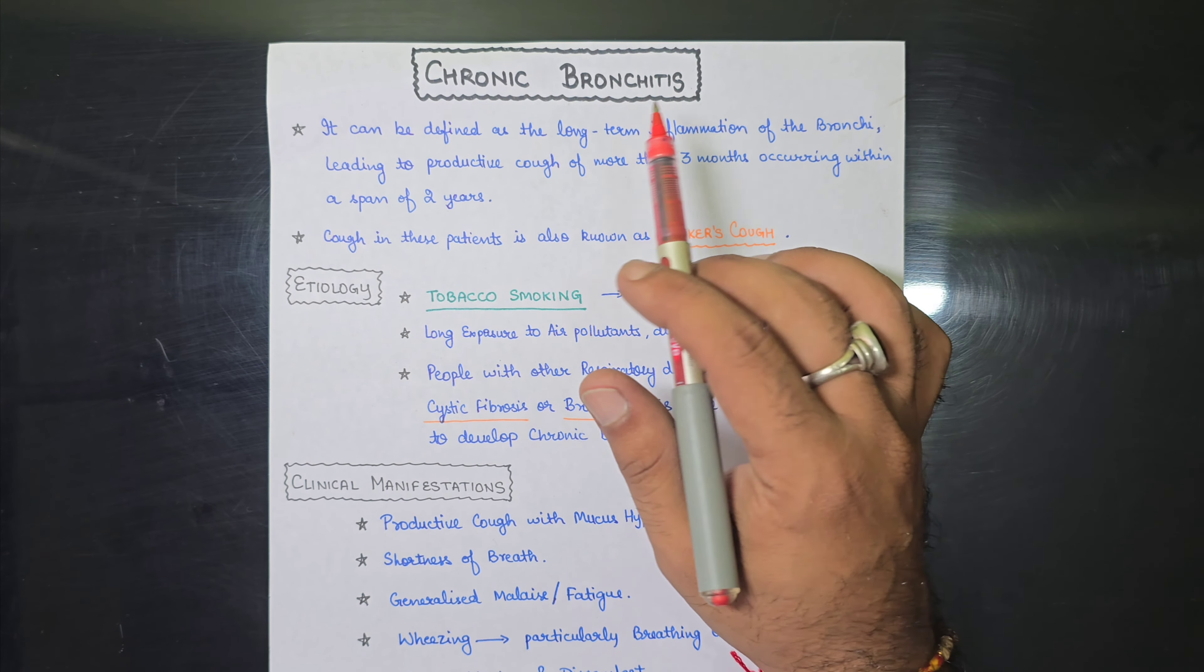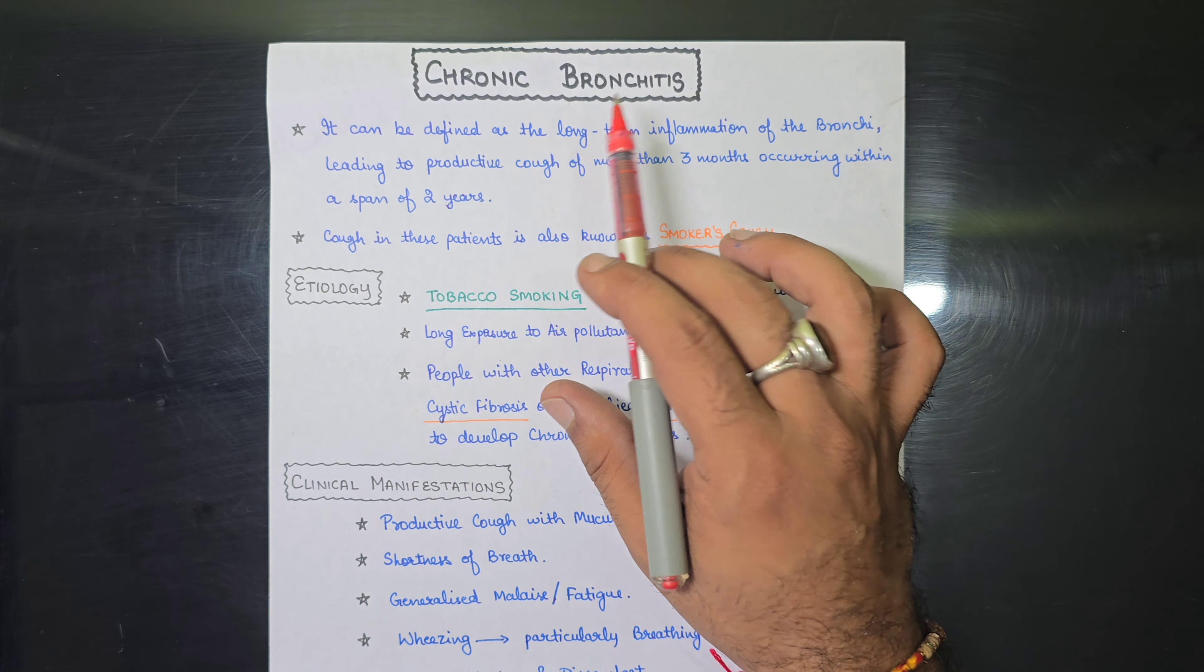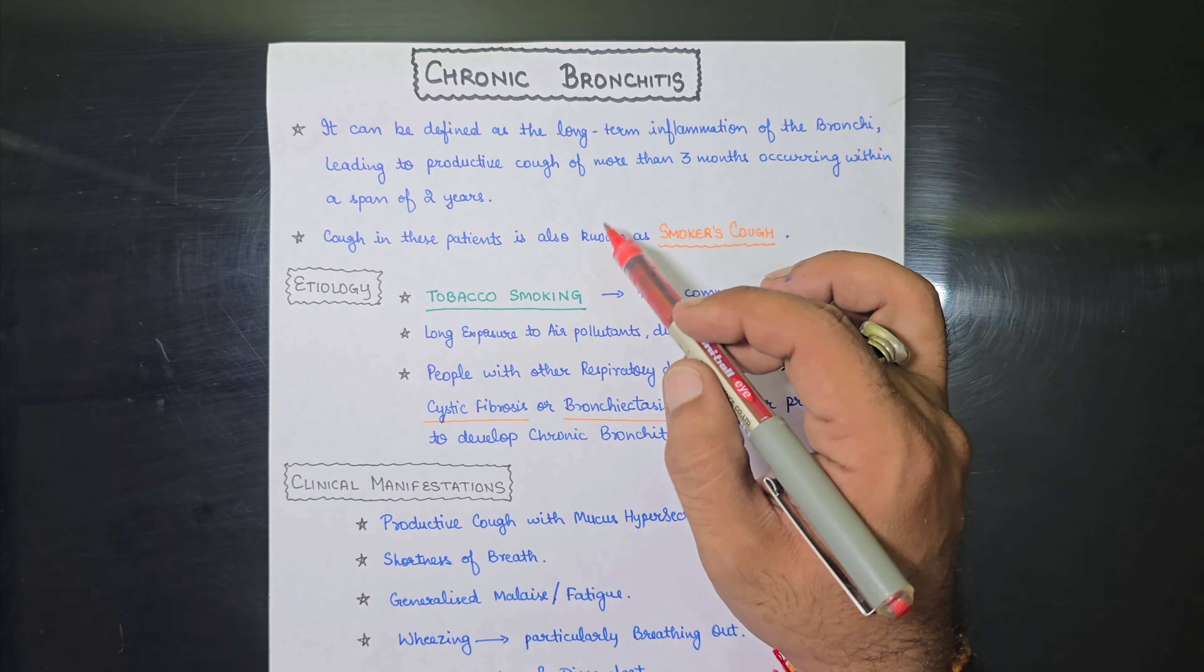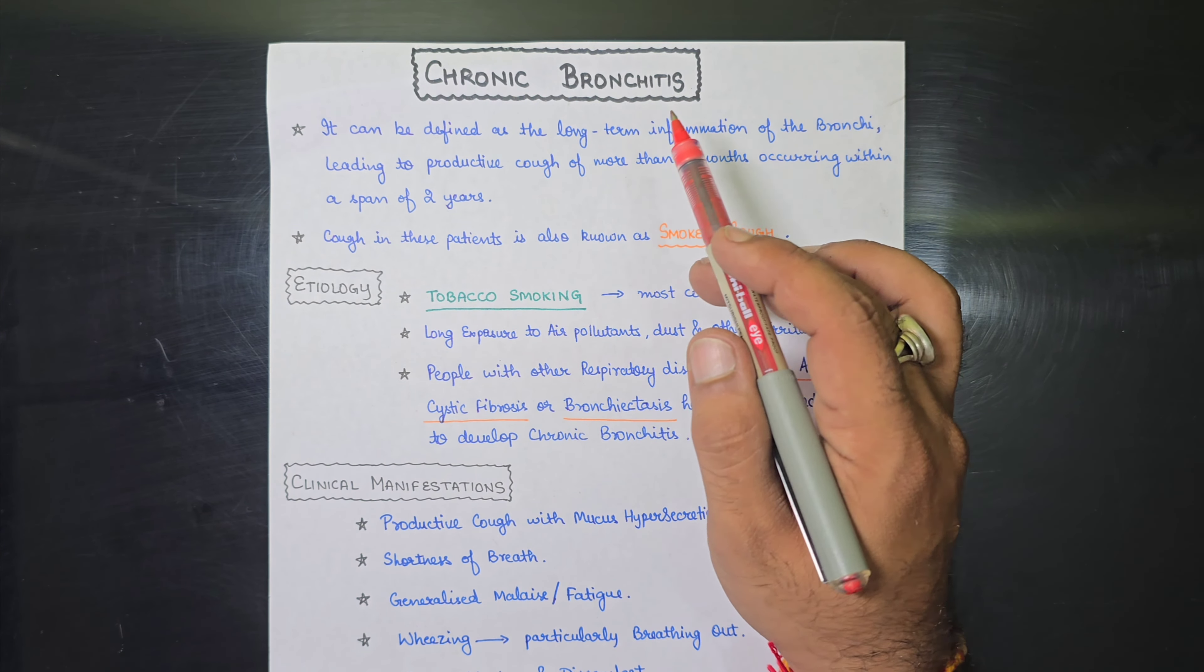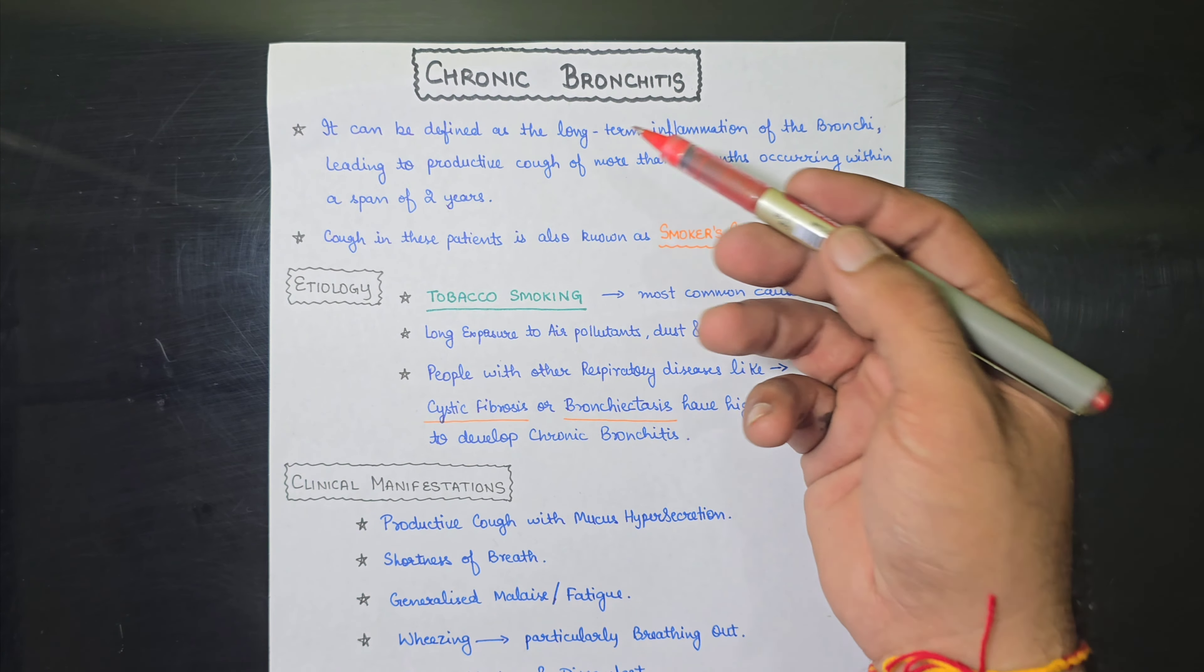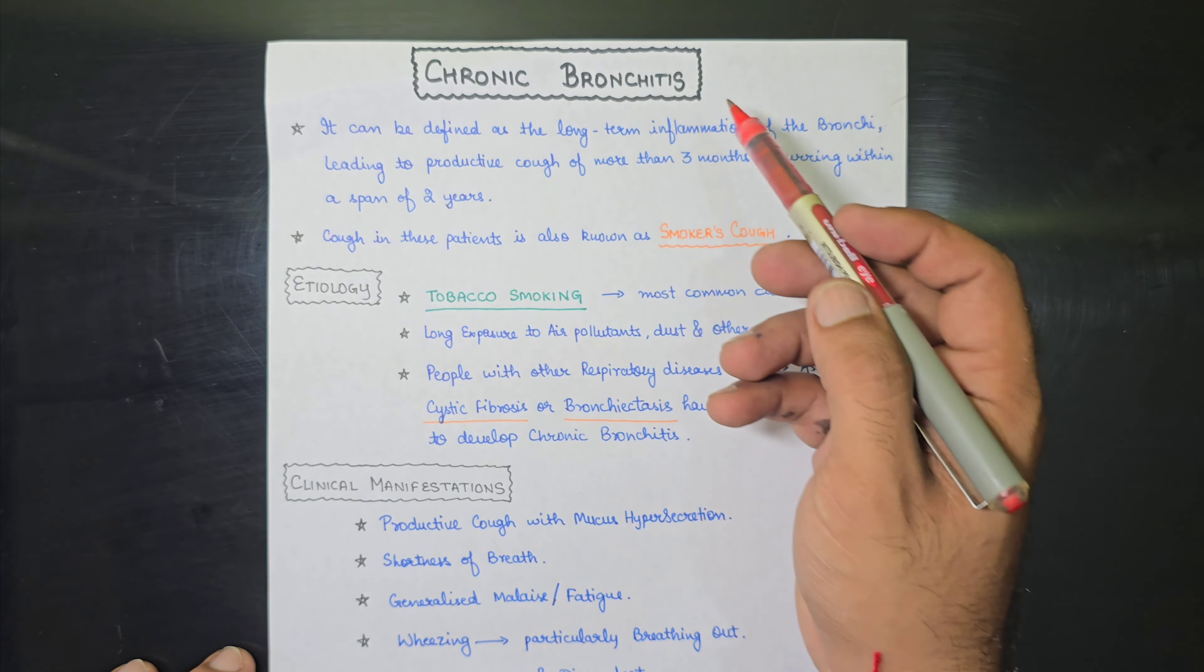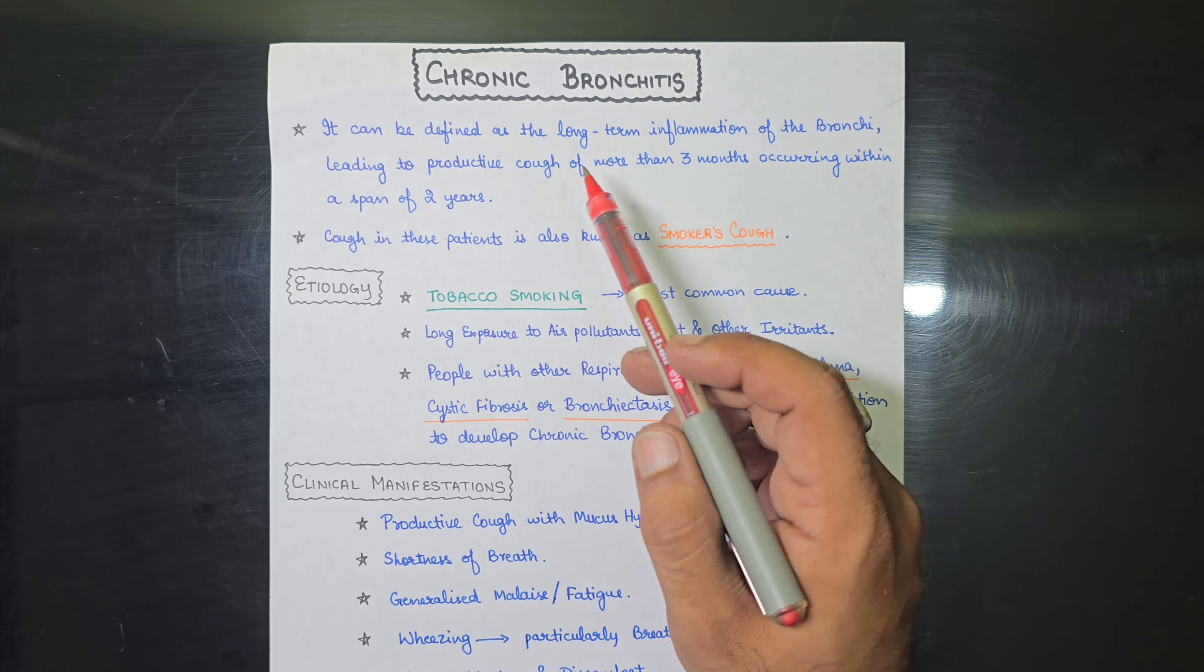So in the COPD there are basically two major subtypes. One is chronic bronchitis and another is emphysema. About emphysema we will read in another video. In this video I am going to tell you about chronic bronchitis.